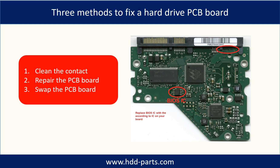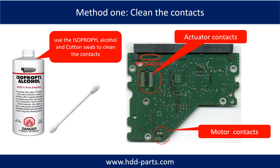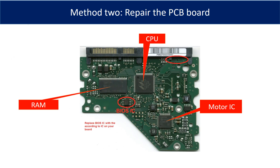There are three methods to fix a hard drive PCB board. One, clean the contacts. Two, repair the PCB board directly. Three, swap the PCB board. Method one: clean the contacts. Cleaning the contacts on the PCB board and also on the hard drive can fix the problem caused by poor connection between the PCB board and the hard drive. The most vulnerable parts on the PCB board are the power supply circuit and motor IC.